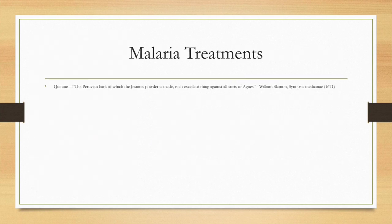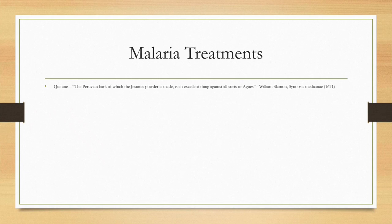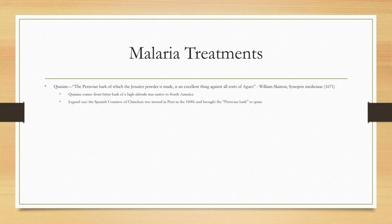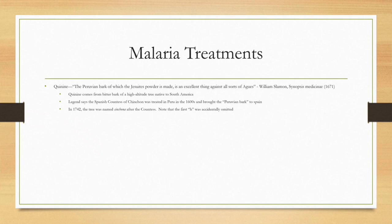Regarding treatments, quinine is interesting. In 1671, William Slayman wrote that the Peruvian bark — of which the Jesuits' powder is made — is an excellent thing against all sorts of agues, which is like marsh fever or malaria. They called quinine a Jesuits' powder. It comes from a bitter bark of a high-altitude tree native to South America. Legend says a Spanish countess of Cinchon was treated in Peru in the 1600s and brought the Peruvian bark to Spain. In 1742, the tree was named Cinchona after the countess — though the first H was omitted accidentally, and that name just stuck.